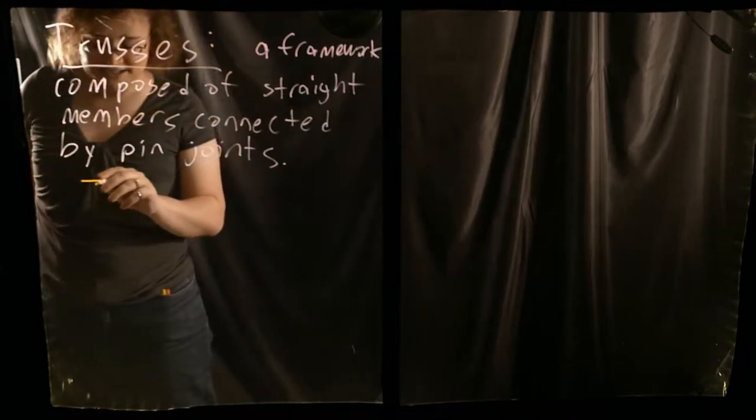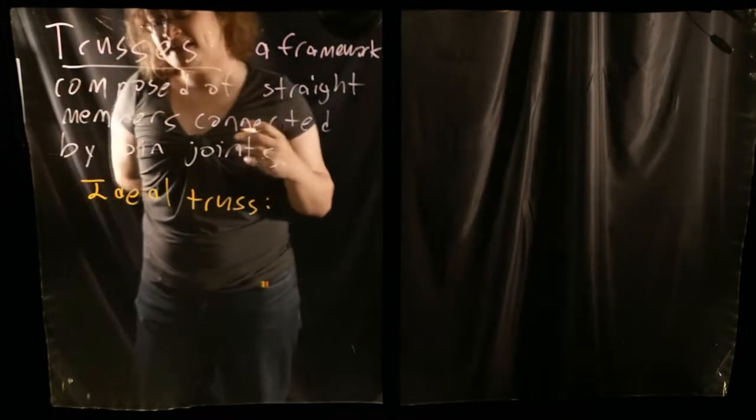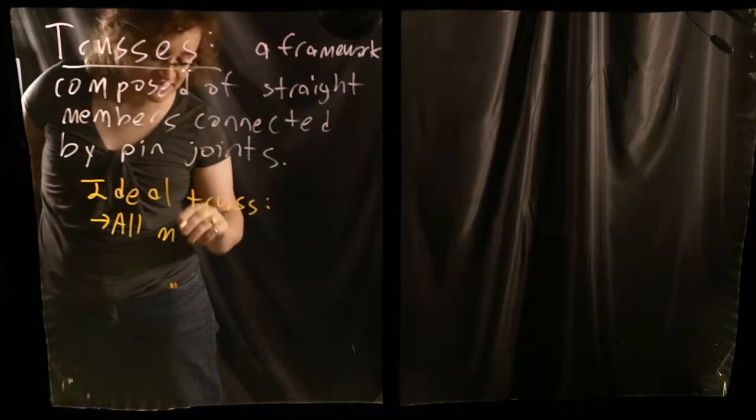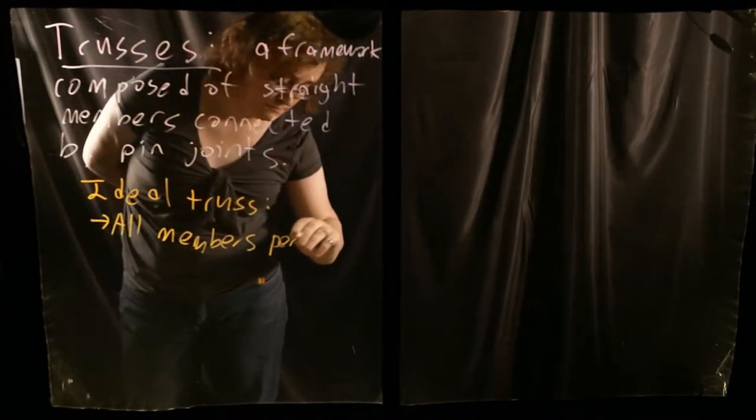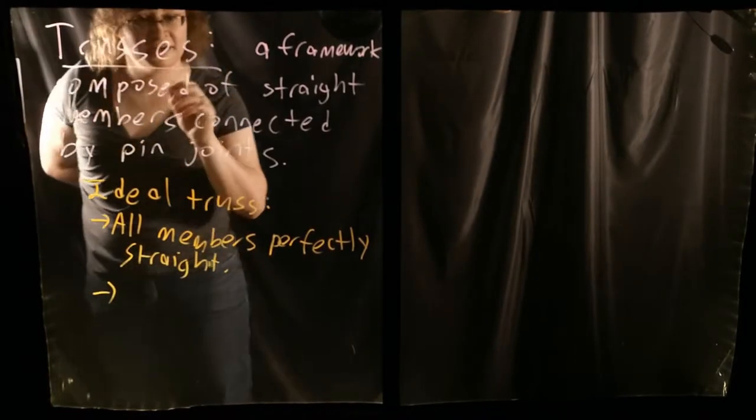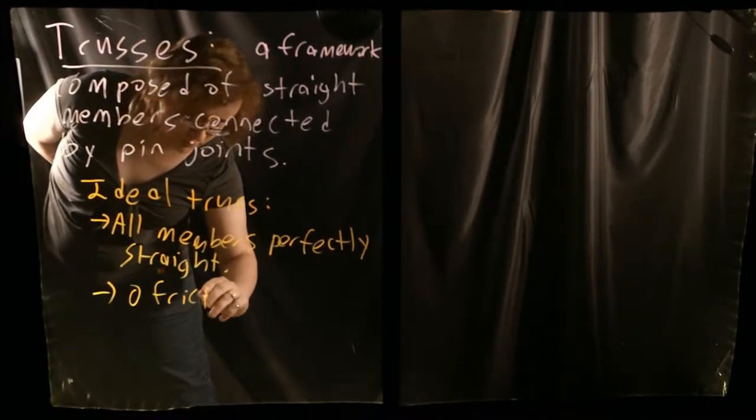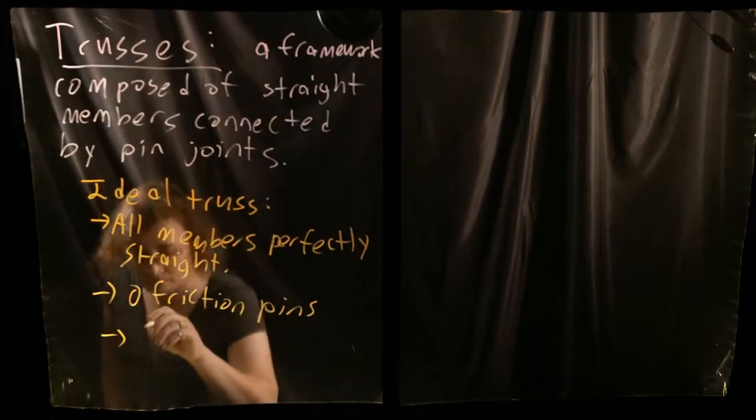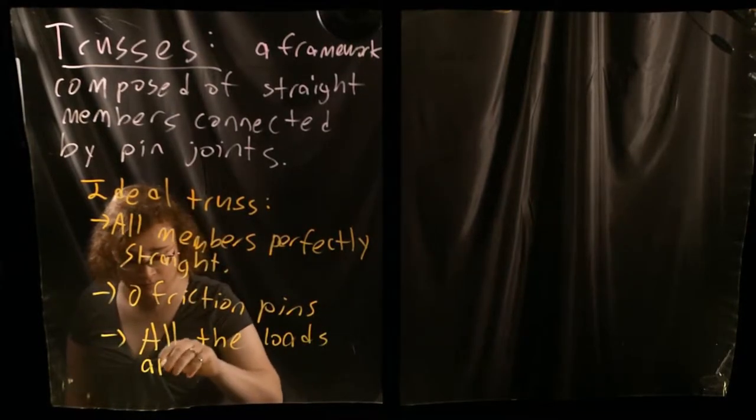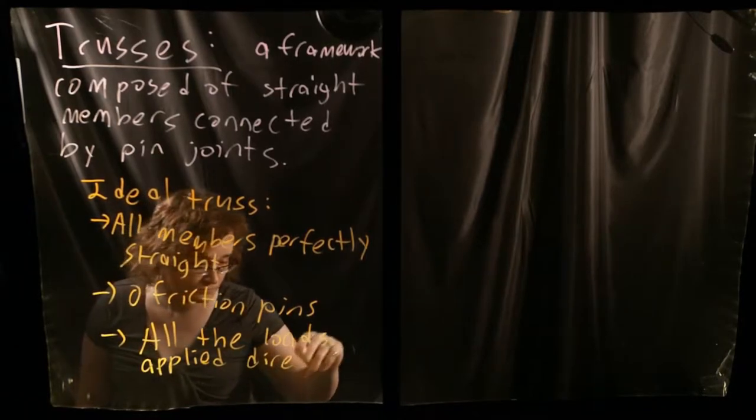I would define a truss as a framework composed of straight members connected by pin joints. An ideal truss would be one where all members are perfectly straight, with perfect zero friction pins, and all loads applied directly to the pin joints.